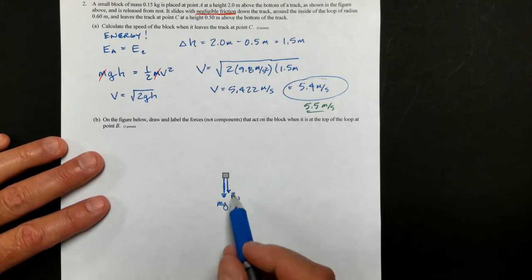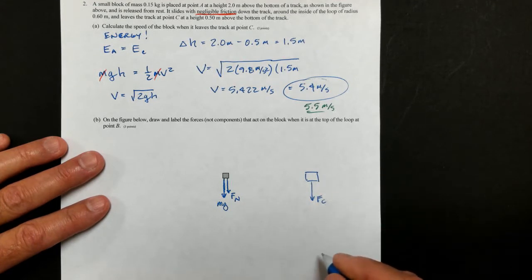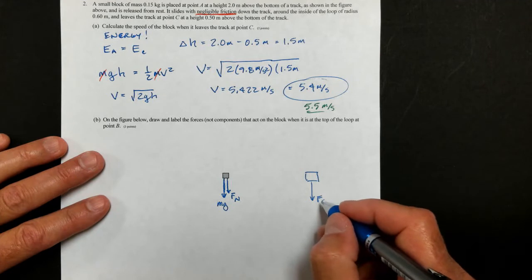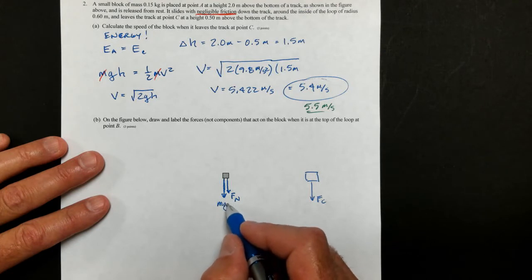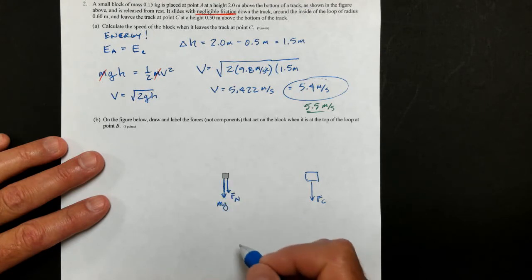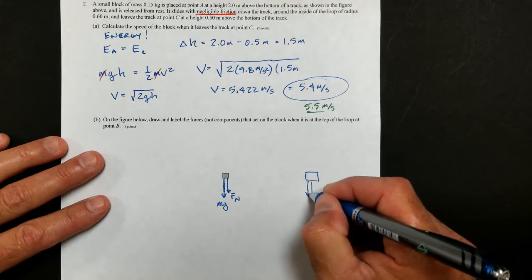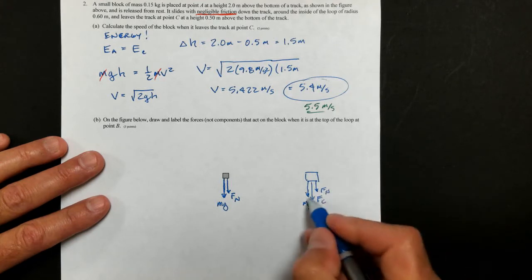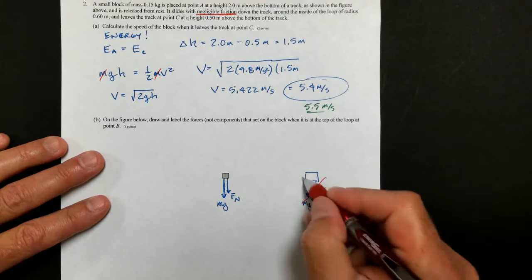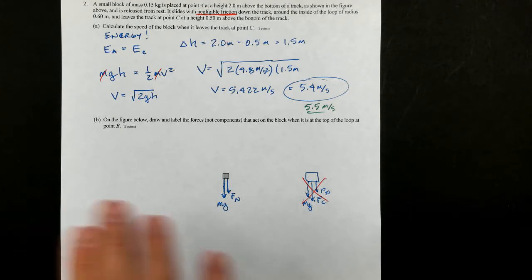Again, they're going to be looking for you to have both forces labeled. Please do not label this Fc, okay? That is the net force. That net force, the centripetal force that causes the circular motion, is made up of the two forces, the Mg force and the Fn force. They both point towards the center. They both contribute to Fc. You should not put Fc in your free body diagram alone, and you definitely should not do something like this where you have Mg and Fn. Fn and Mg make up the centripetal force, so this is no good. Okay, so what we're looking for is just the two forces pointing towards the center. All right, let's see what's next.